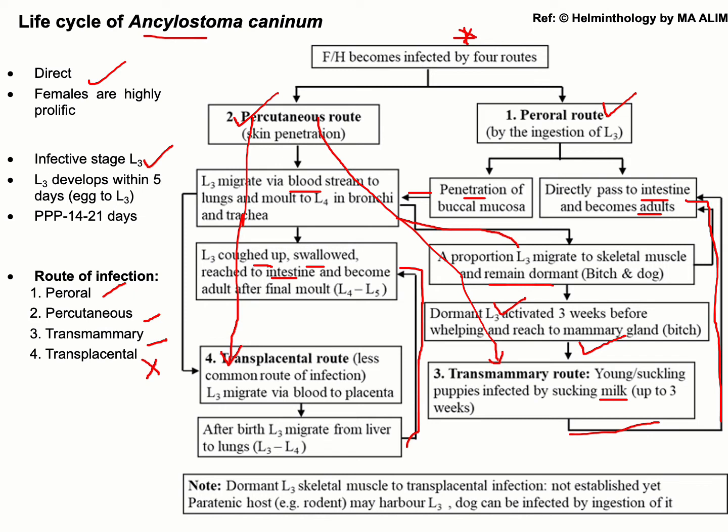In summary: direct life cycle, infective stage is L3, four routes of infection. The first is the oral route, the second is the percutaneous route, which contributes to the transmammary route as well as the transplacental route. From the oral route, some L3 also follow the percutaneous route. This concludes the life cycle of Ancylostoma caninum.